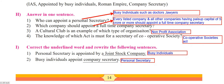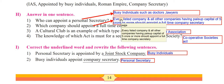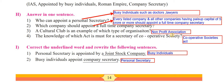Now let's go to question number 1H - answer in one sentence. You have to write the entire statement. First one: who can appoint a personal secretary? Definitely busy individuals such as doctors, lawyers, etc. - any professional who is busy and needs to delegate their work can go for a personal secretary. So you can write: busy individuals such as doctors, lawyers, etc. can appoint a personal secretary. This is how you are supposed to write.